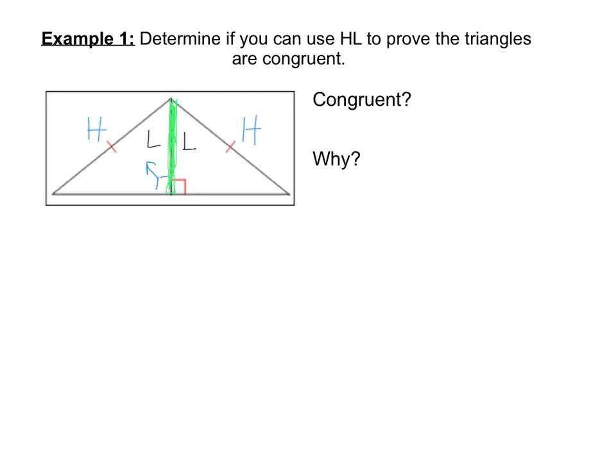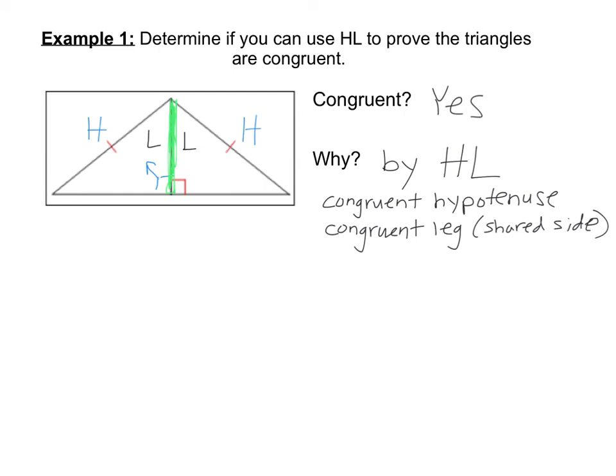We have an L in both of the triangles. So, these are congruent by HL. Add to your interactive notebook that we have a congruent hypotenuse. That was the ones that were already marked for us. And we also have a congruent leg because it's the shared side.